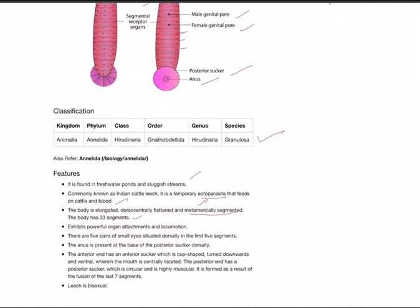If the body is segmented with lines, then we say metamerism. The body has 33 segments and exhibits powerful organ attachments and locomotion. It has a sucker with which it sucks blood and gets attachment. There are five pairs of small eyes situated dorsally in the first five segments.